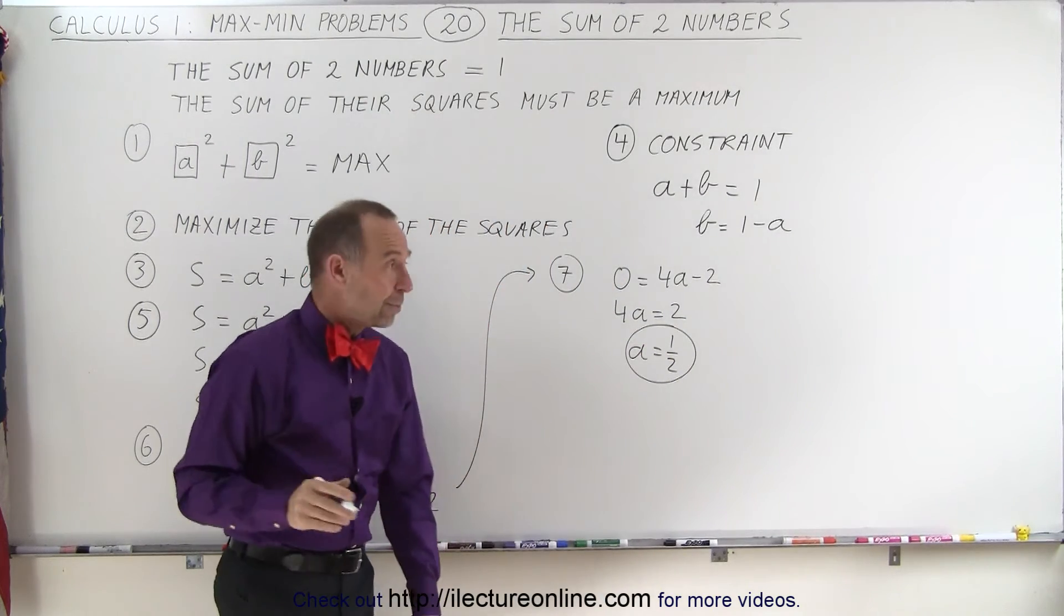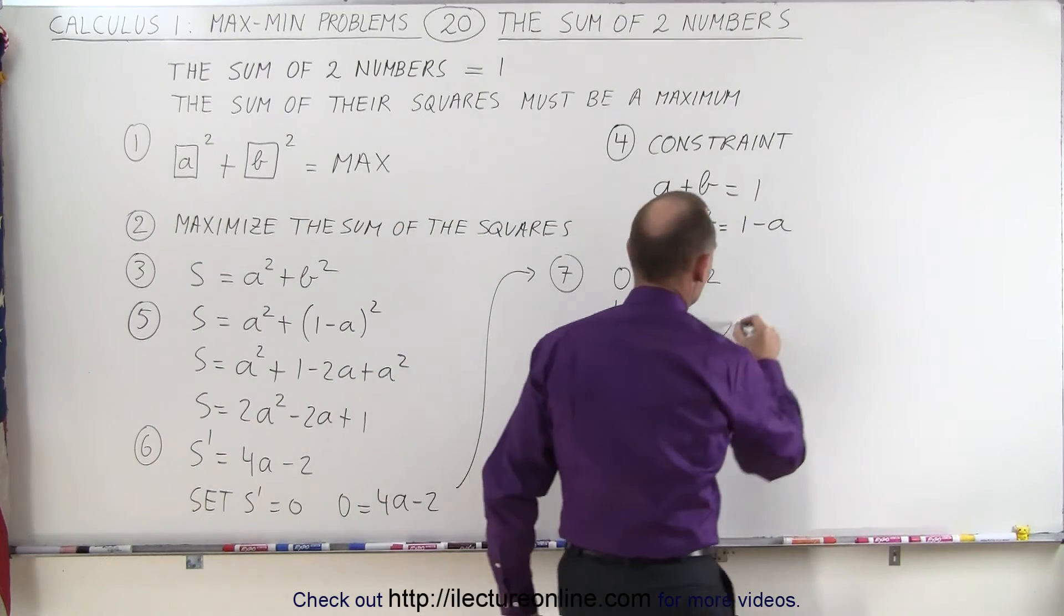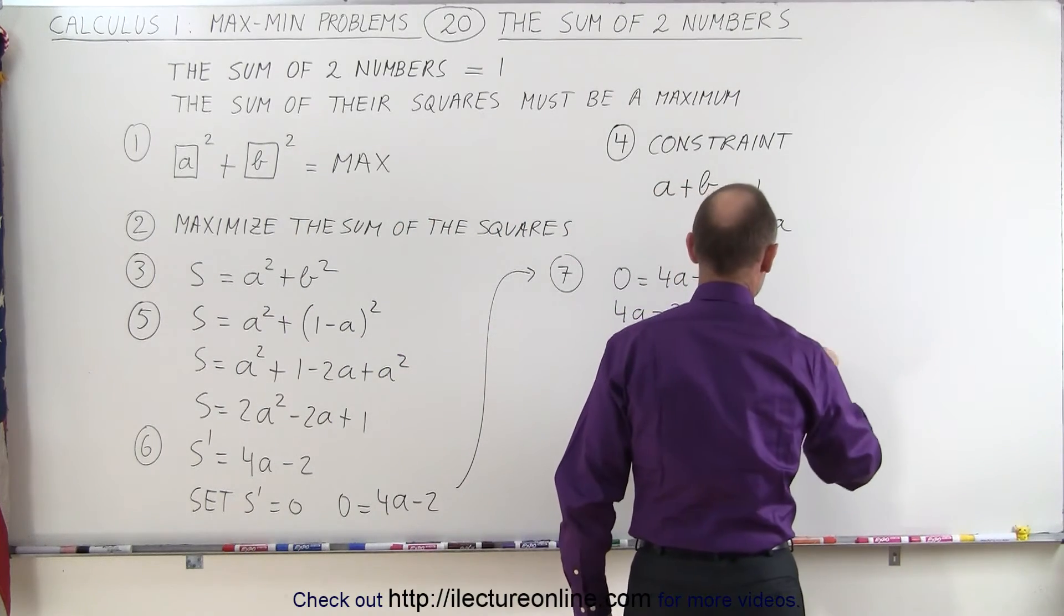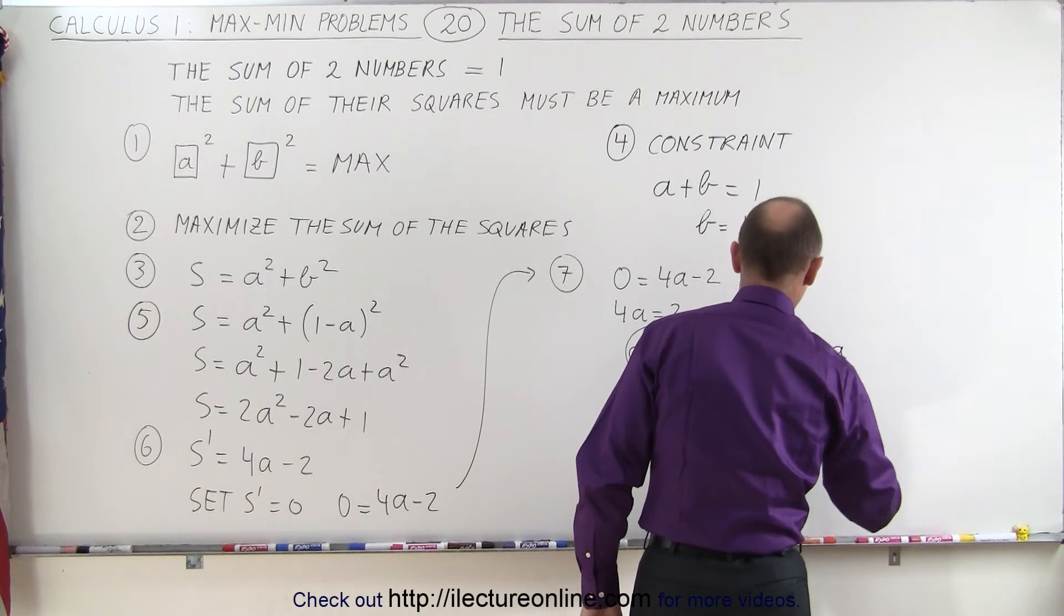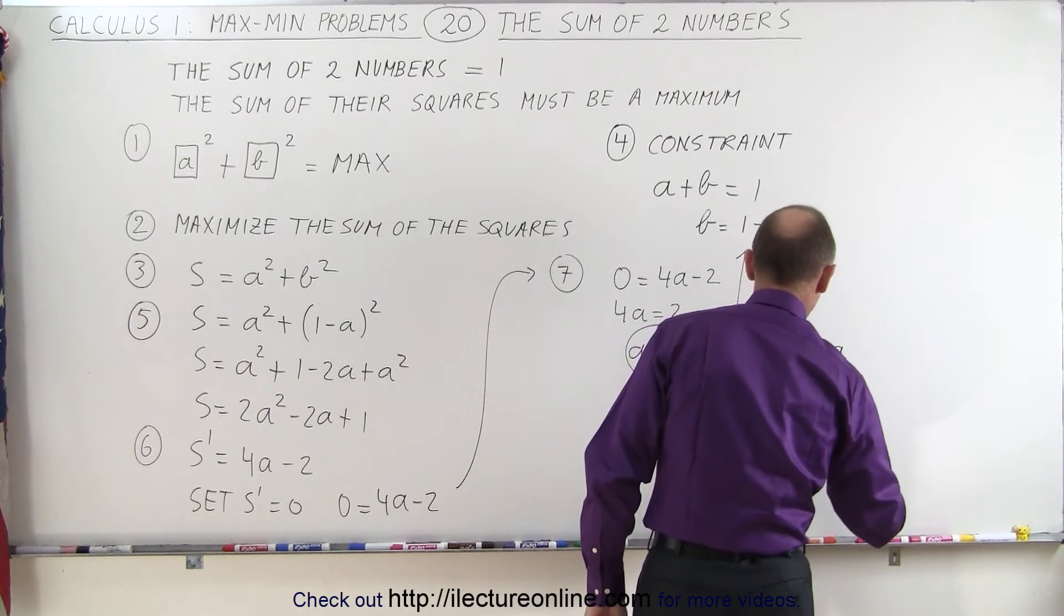And of course, now that we know A, we can also solve for B by plugging it back into this equation. We get B is equal to 1 minus A. B is equal to 1 minus 1 half. And so B is also 1 half.